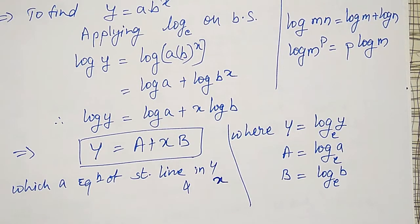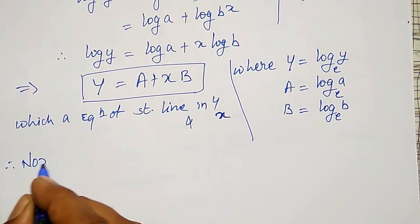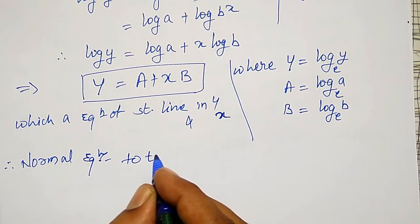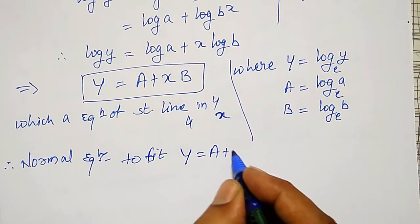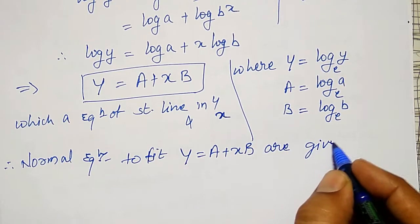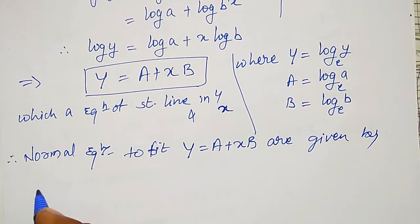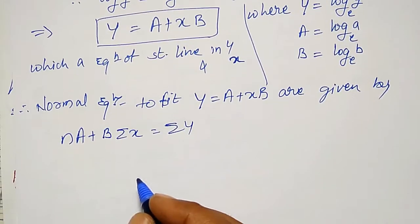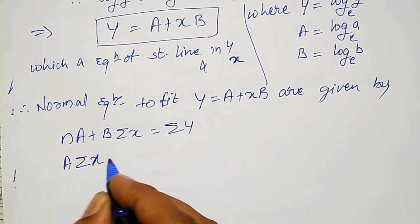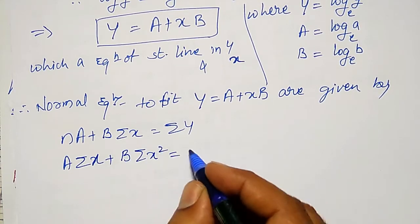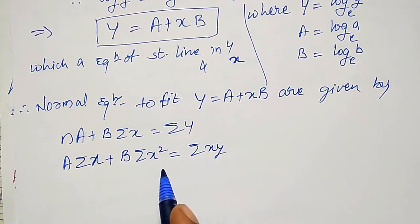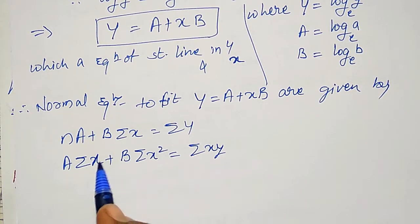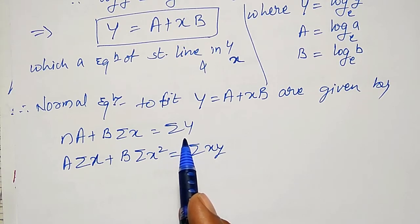Therefore, normal equations to fit capital Y equal to A plus x·B are given by: n·A plus B·summation(x) equal to summation(Y). And the second normal equation, multiplying through by x: A·summation(x) plus B·summation(x²) equal to summation(xY). According to this, I have to form a table to get summation of x, summation of x², summation of capital Y, and summation of xY.